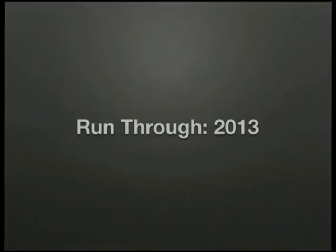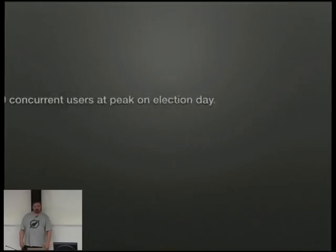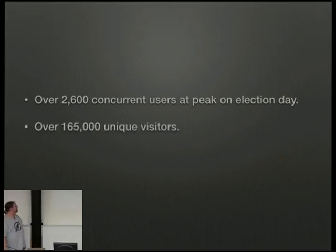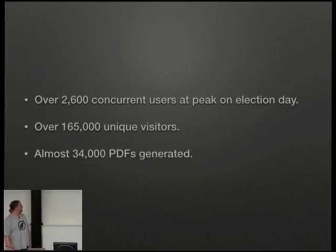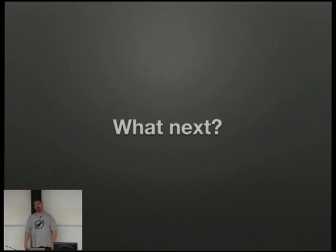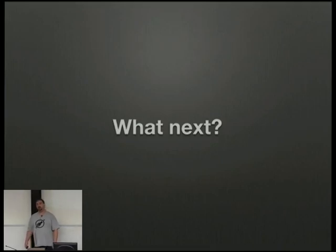The site worked fairly well this time. We had over 2,600 concurrent users on election day — I was watching the number go up and up. We had over 165,000 unique visitors. Most of it was via word of mouth on things like Twitter and Facebook — I still get people who come up to me and say 'I used your site, my friends used your site, my family used your site.' We generated nearly 34,000 PDFs. What's next? I really want to get the editor working better. The site is all up on GitHub if anyone wants to have a look at how it's done.